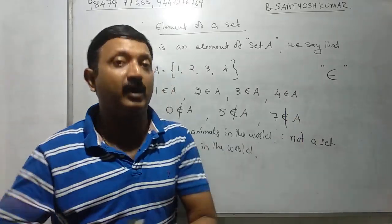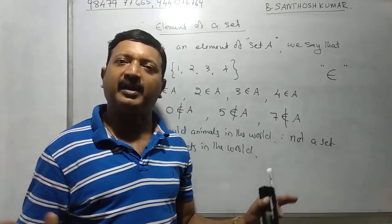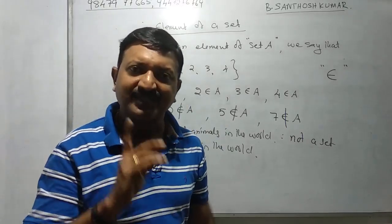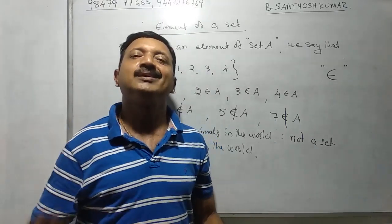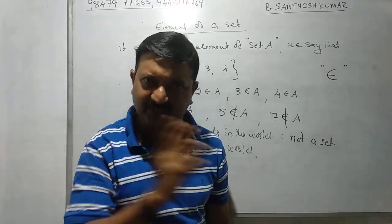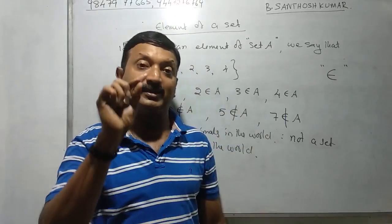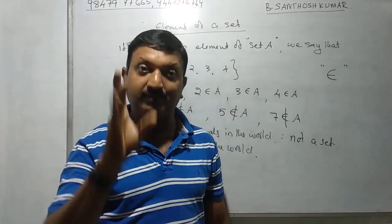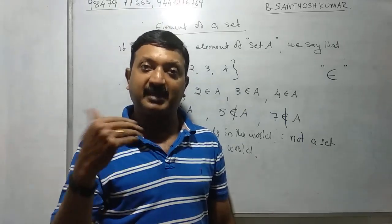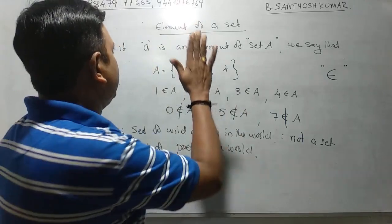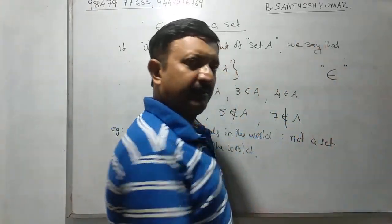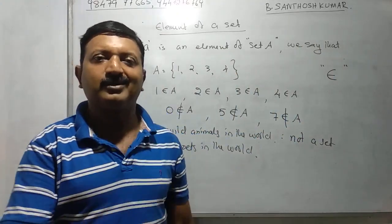A set is a well-defined collection of objects. We covered natural numbers, odd numbers, real numbers, rational numbers. The element symbol ∈ means 'belongs to.' That concludes our introduction to sets.